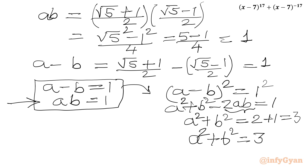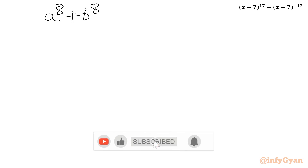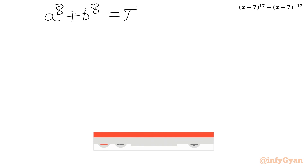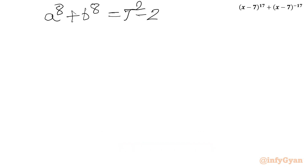Squaring A² + B² = 3: A⁴ + 2A²B² + B⁴ = 9. Since (AB)² = 1, we get A⁴ + B⁴ = 9 - 2 = 7. Squaring again: A⁸ + 2(AB)⁴ + B⁸ = 49, so A⁸ + B⁸ = 47.